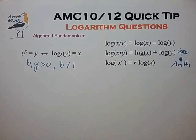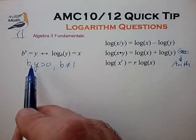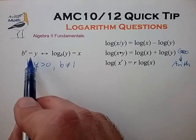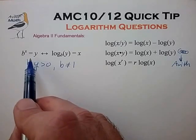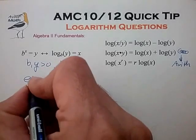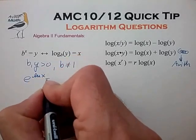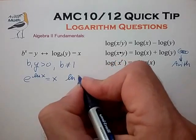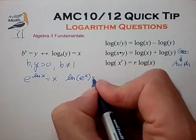Another AMC problem angle stems from the basic definition that constructs the log function to be the inverse of the exponential function. So for example in the base of e we have that e to the natural log of x is equal to x and also that natural log of e to the x is equal to x.